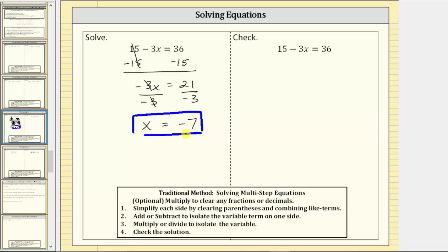Let's go ahead and check our solution by substituting negative seven for x, which gives us 15 minus three times negative seven equals 36. Now we simplify the left side of the equation. Simplifying here, we have minus three times negative seven, which is minus negative 21, which is equivalent to plus 21. The left side simplifies to 15 plus 21 equals 36.